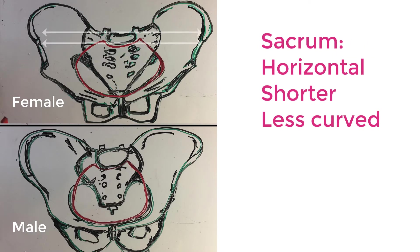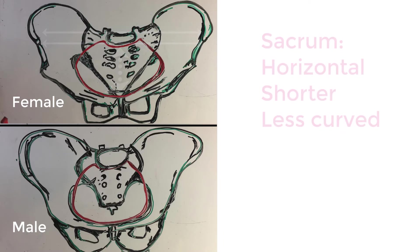Secondly, the female sacrum is more horizontally oriented, shorter and less curved, again increasing the size of the birth canal.